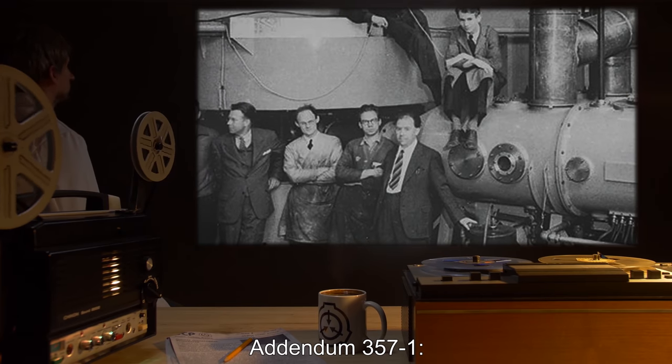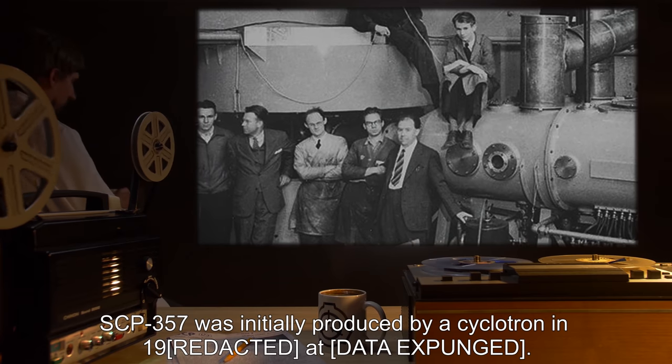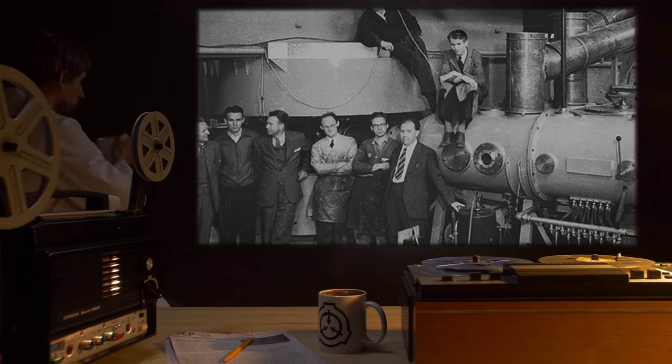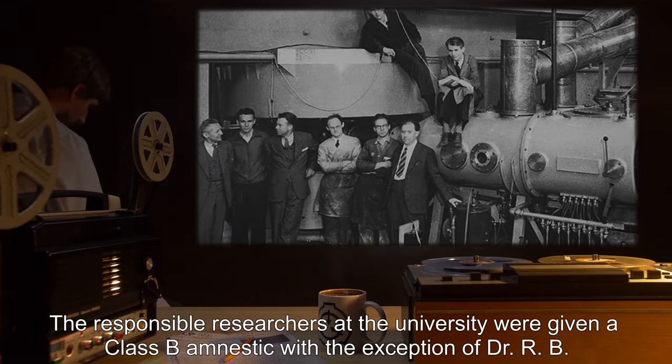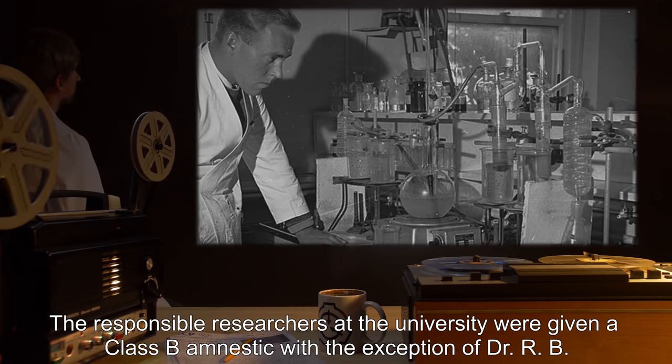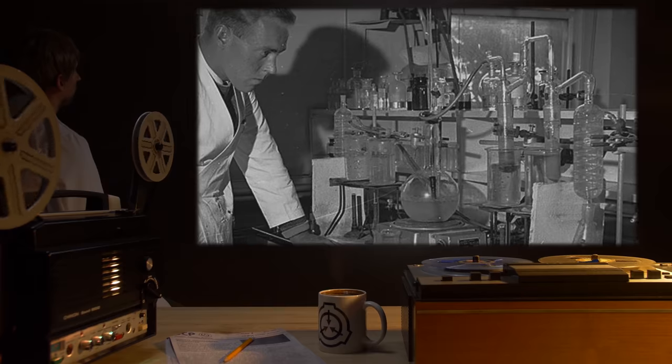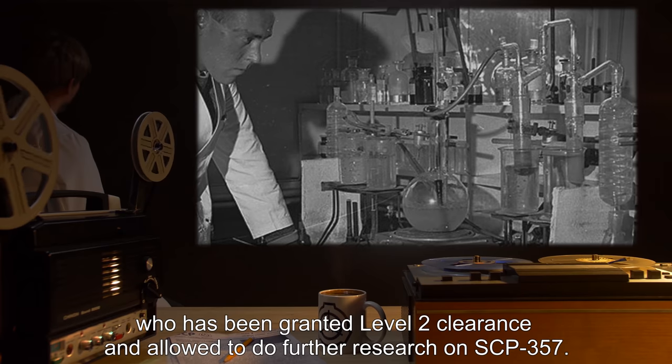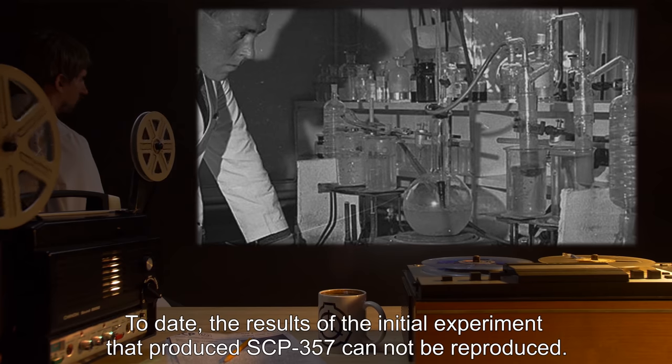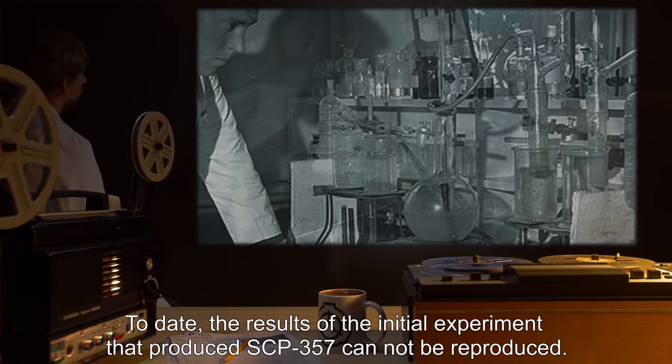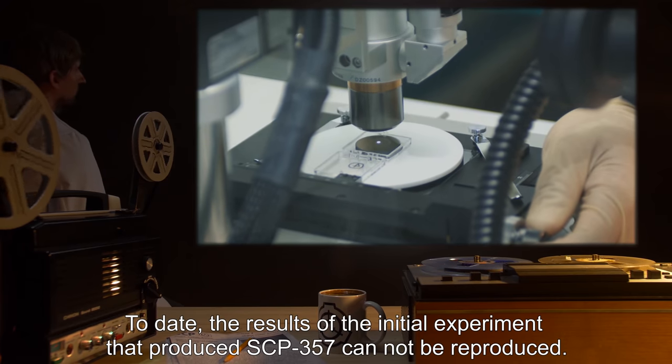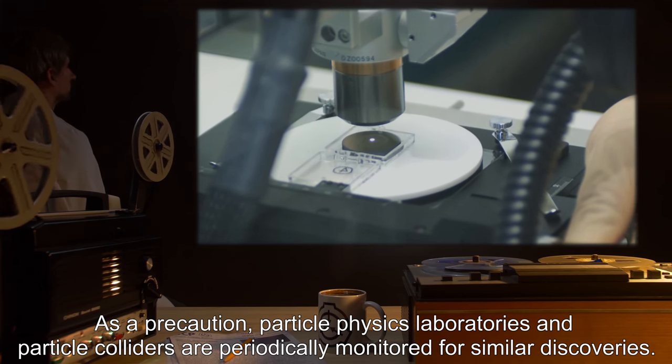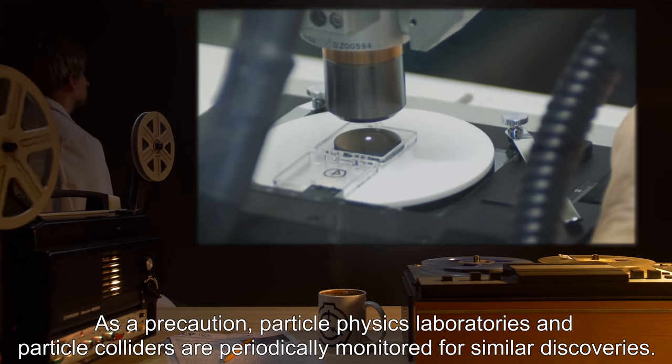Addendum 357-1: SCP-357 was initially produced by a cyclotron in 19[data expunged]. The responsible researchers at the university were given a Class B amnestic, with the exception of Dr. R.B., who has been granted Level 2 clearance and allowed to do further research on SCP-357. To date, the results of the initial experiment that produced SCP-357 cannot be reproduced. As a precaution, particle physics laboratories and particle colliders are periodically monitored for similar discoveries.